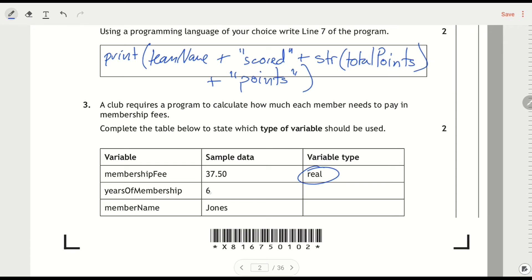So we've got, here's membership six, so we should know six as an integer. The member name, the example is Jones, so that's a string. Nice and easy.